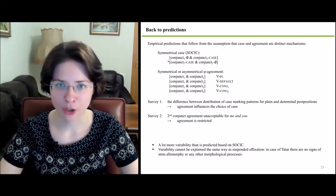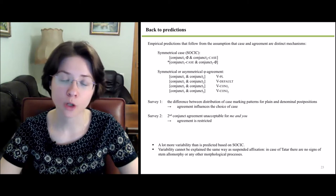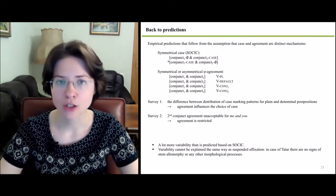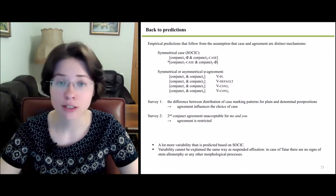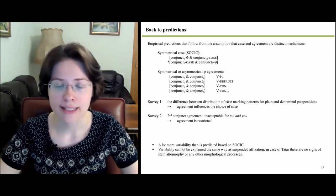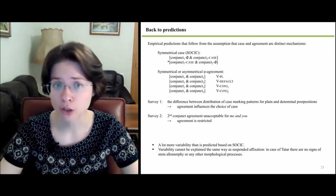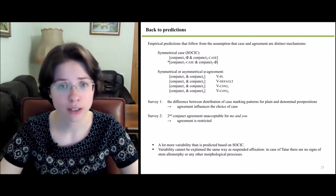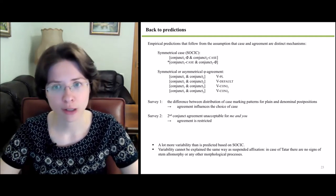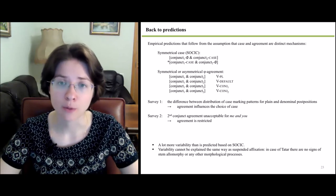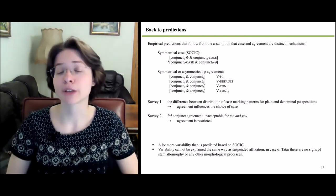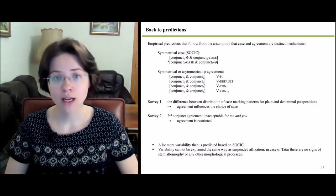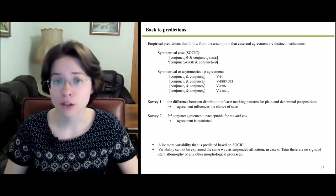As for agreement patterns, the prediction was that any agreement pattern should be possible. Again, this is not the case. In Survey 1 we observe the difference between distribution of case marking patterns for plain and denominal postpositions, which means that agreement influences the choice of case. In Survey 2 we see that second conjunct agreement is unacceptable for the 'me and you' coordination, which suggests that agreement is restricted. Overall, we observe much more variability than predicted by Weiser's approach. Moreover, the observed variability cannot be explained the same way as suspended affixation, since in Tatar there are no signs of stem allomorphy or any other morphological processes.